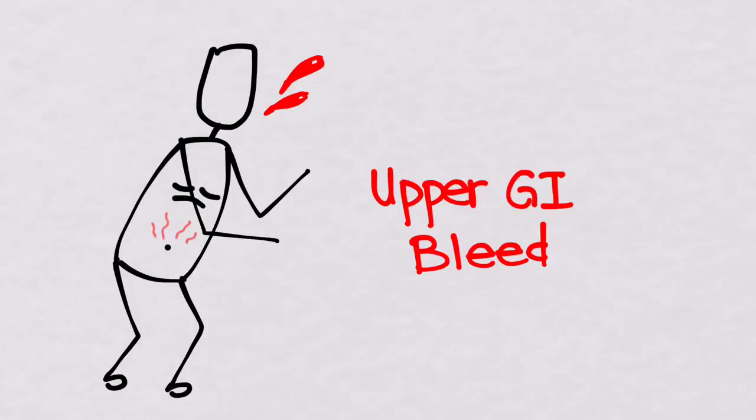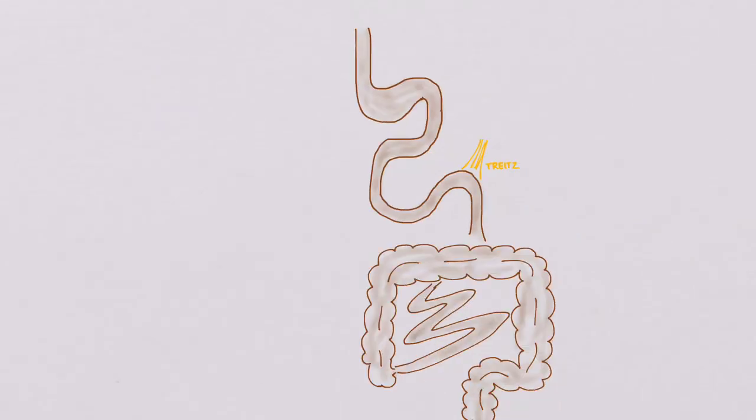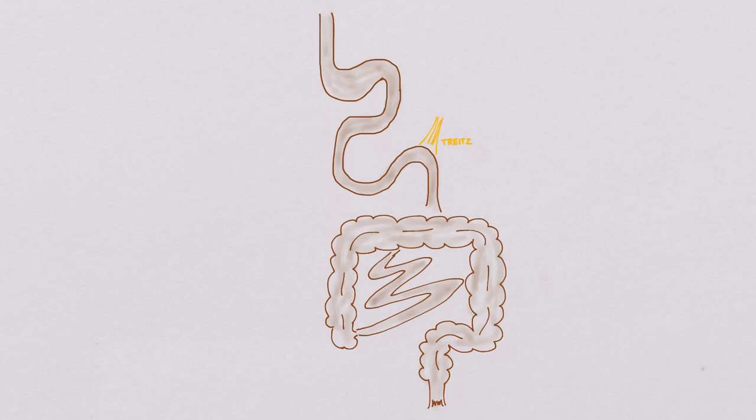Let's talk about upper GI bleeds. This refers to any bleeding that comes from the GI tract that is proximal to the ligament of Treitz. So we're talking about anything that comes from the esophagus, stomach, or duodenum.